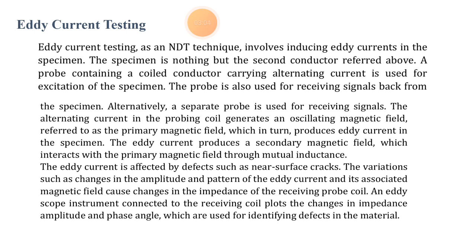The alternating current in the probing coil generates an oscillating magnetic field referred to as the primary magnetic field, which in turn produces eddy currents in the specimen. The eddy currents produce a secondary magnetic field which interacts with the primary magnetic field through mutual inductance.